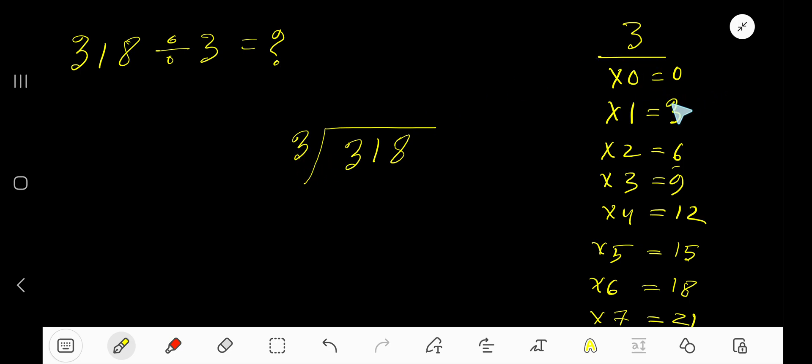3 times 0 is 0, 3 times 1 is 3, 3 times 2 is 6, 3 times 3 is 9. To find the multiplication table of 3 easily, just add 3 to the previous step: 0 plus 3 is 3, 3 plus 3 is 6, 6 plus 3 is 9.